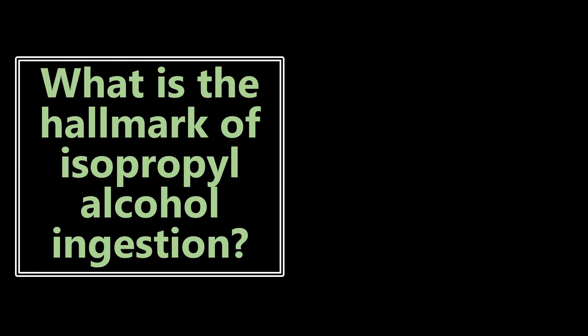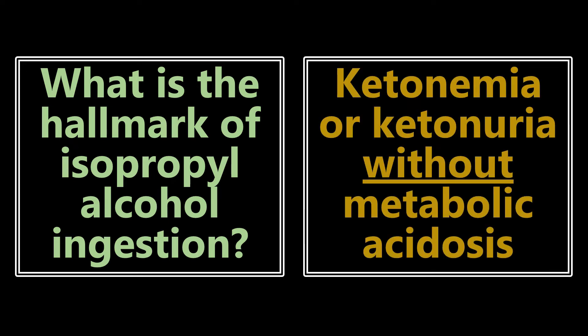What is the hallmark of isopropyl alcohol ingestion? This is super important — they love toxic ingestions on the exam. The hallmark is ketonemia or ketonuria without metabolic acidosis. You will see ketones in the blood or urine, but no metabolic acidosis. On the exam they may give you a toxic ingestion case with labs showing ketones but no elevated anion gap — think isopropyl alcohol ingestion.